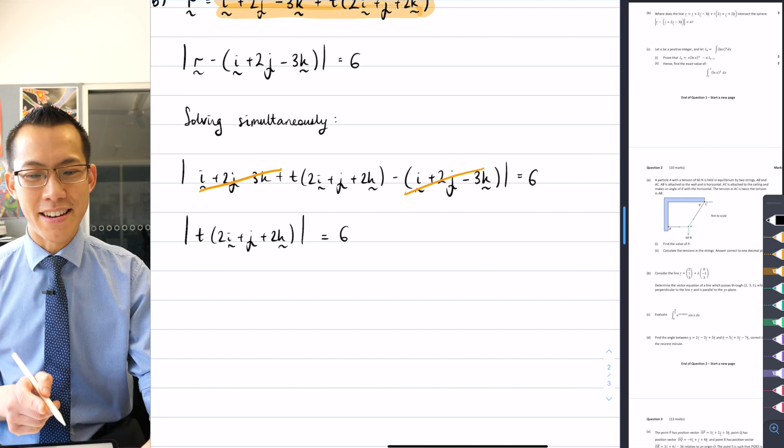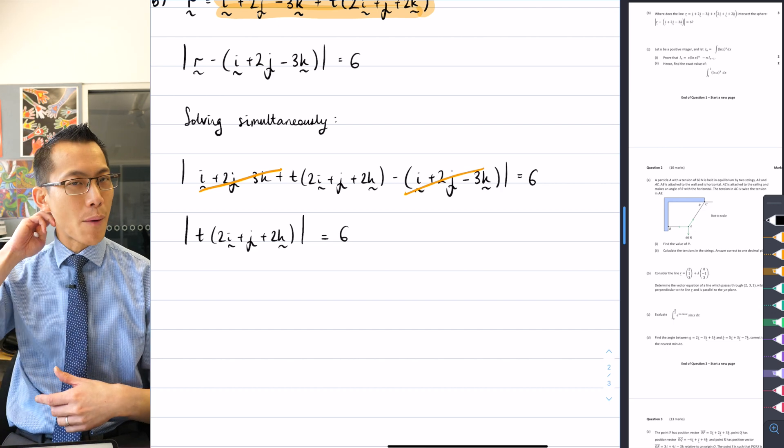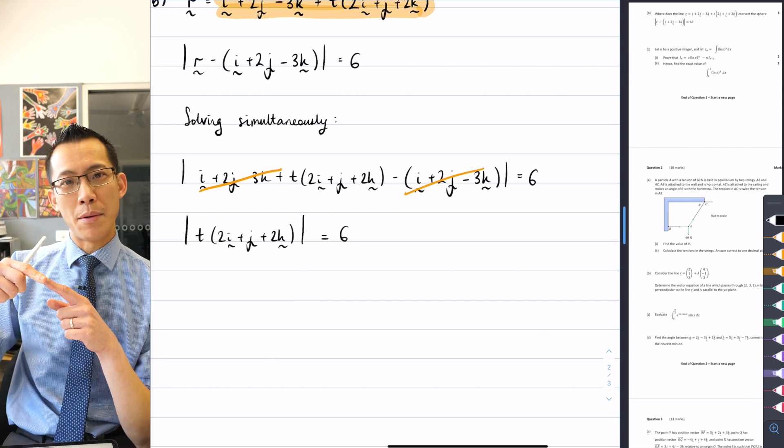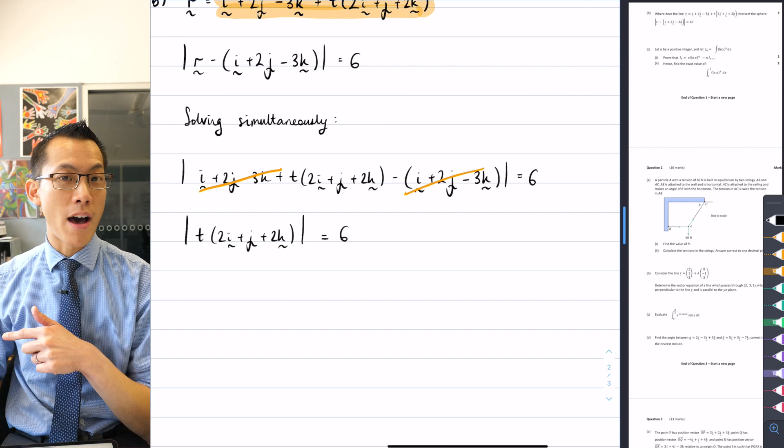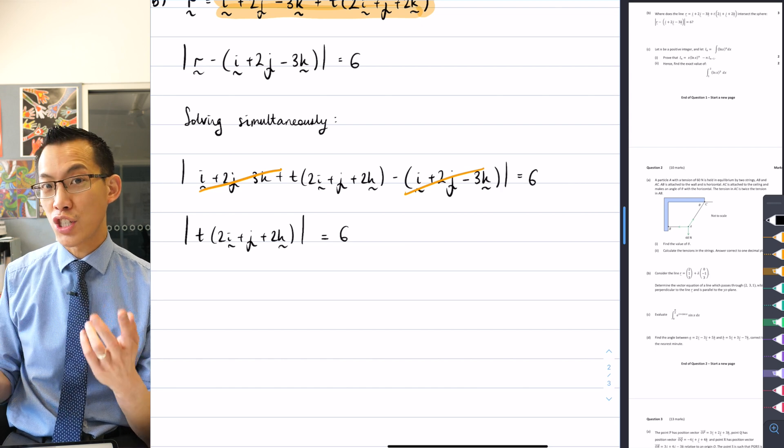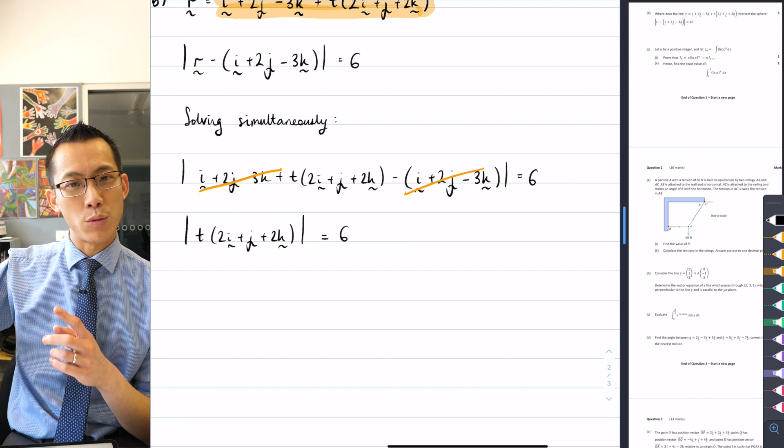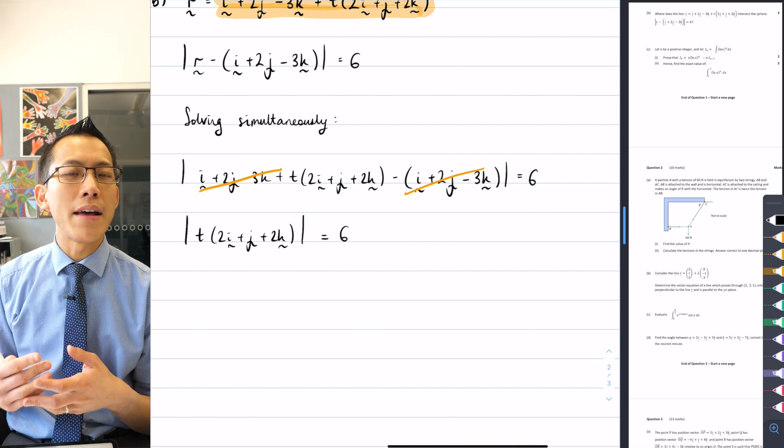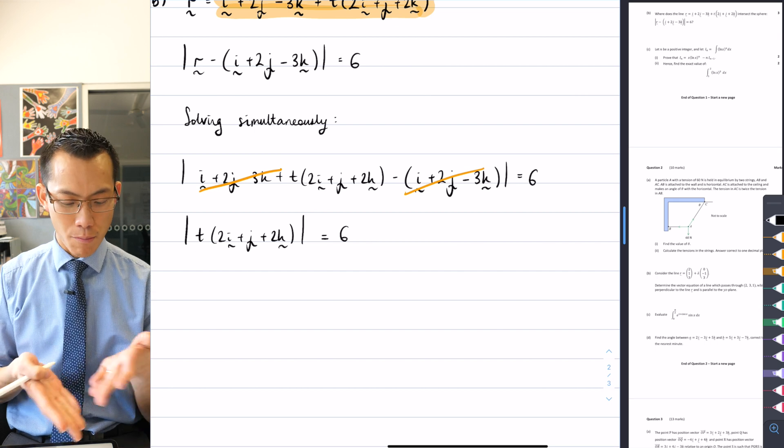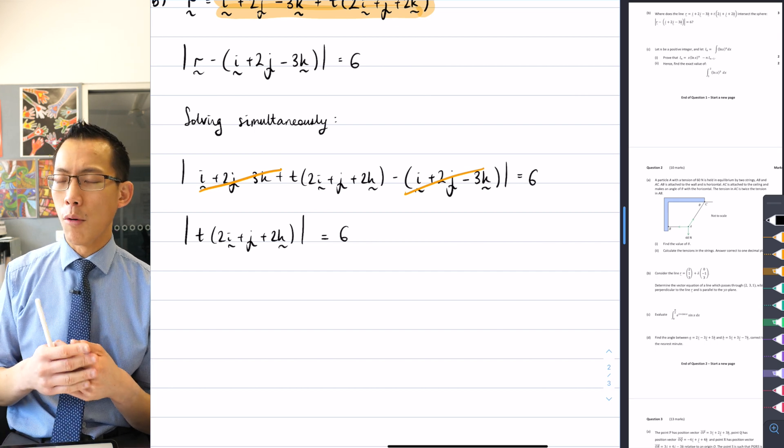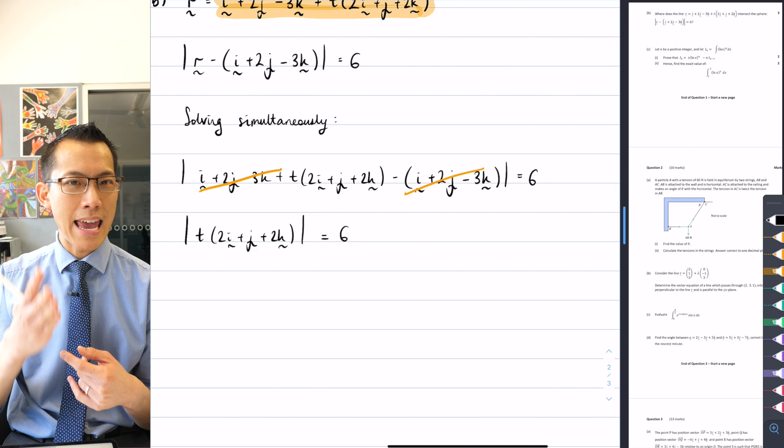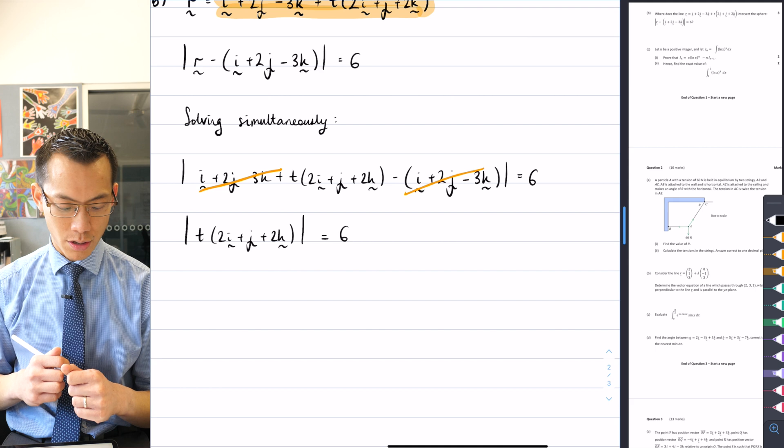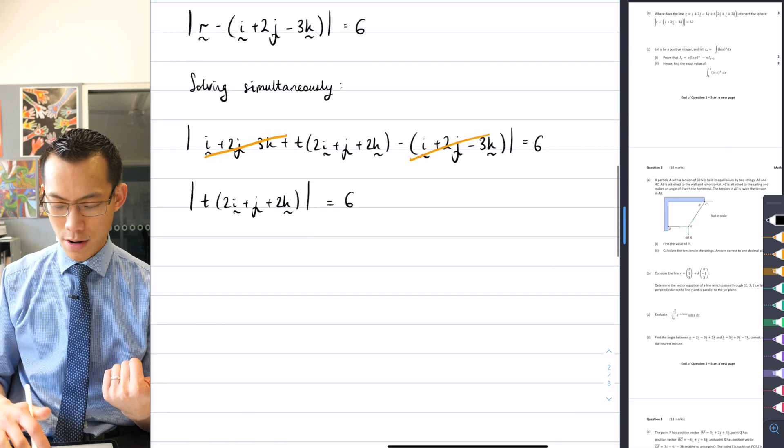All right, now this is the part I need to go and solve. I'm really looking for the values of the parameter. Particular values of the parameter will get you onto particular points on the line. So there are going to be, I expect, a couple of different places that the line will intersect with the sphere.